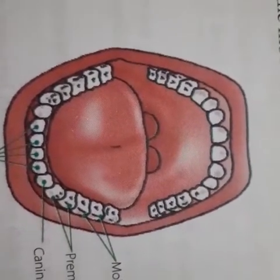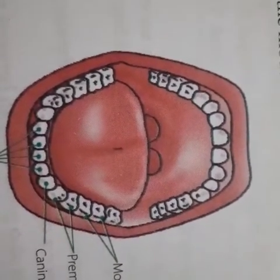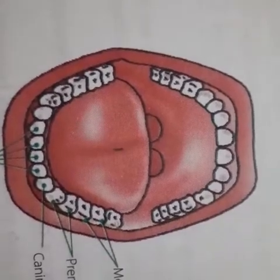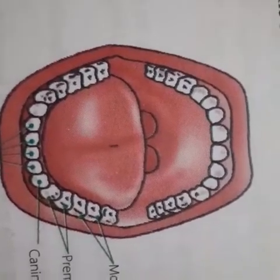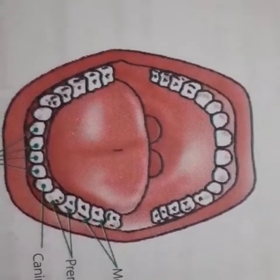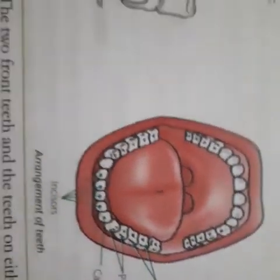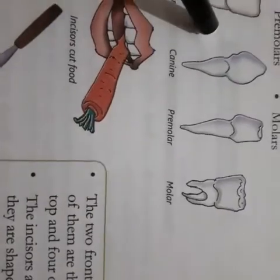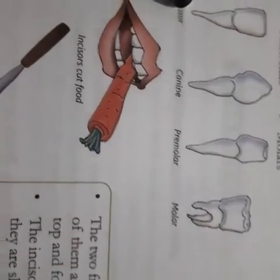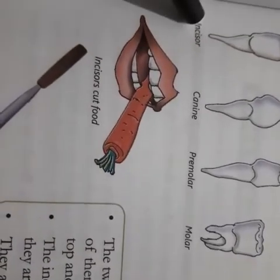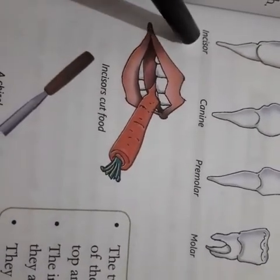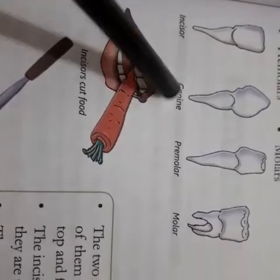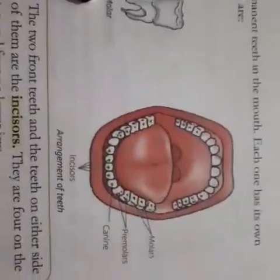These are called permanent teeth. There are 32 permanent teeth, which appear between the ages of 17 and 21. There are 4 types of teeth found in our mouth: incisor, canine, premolar, and molar.